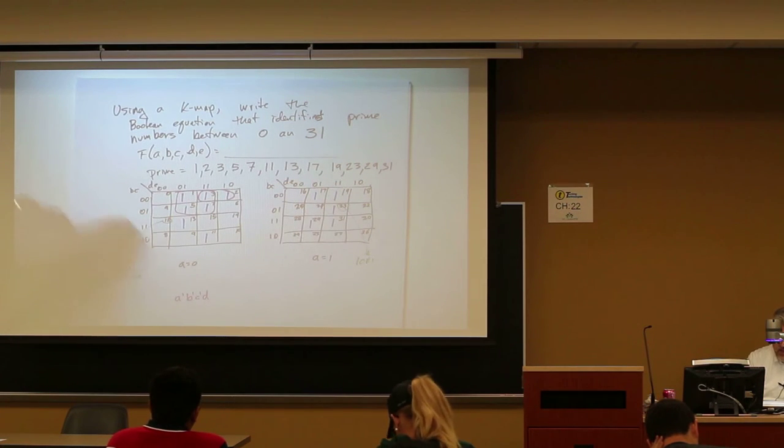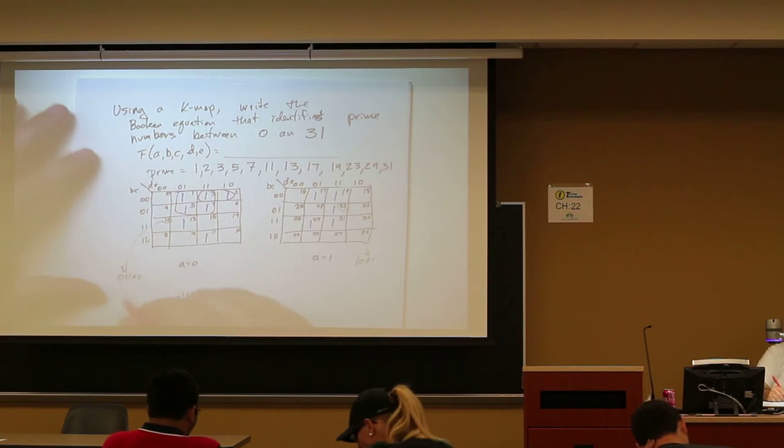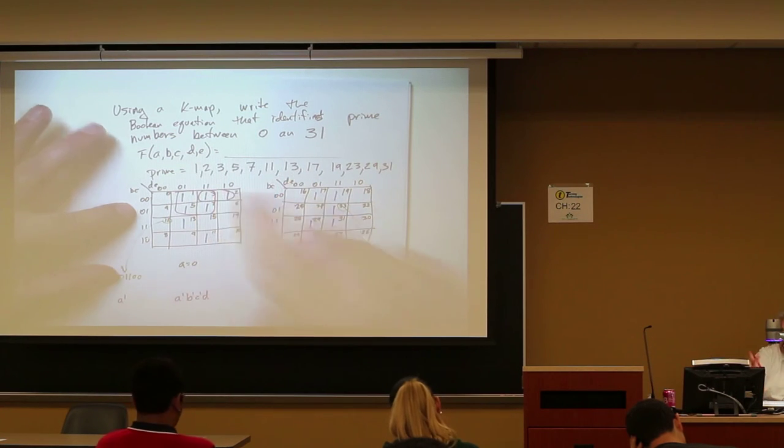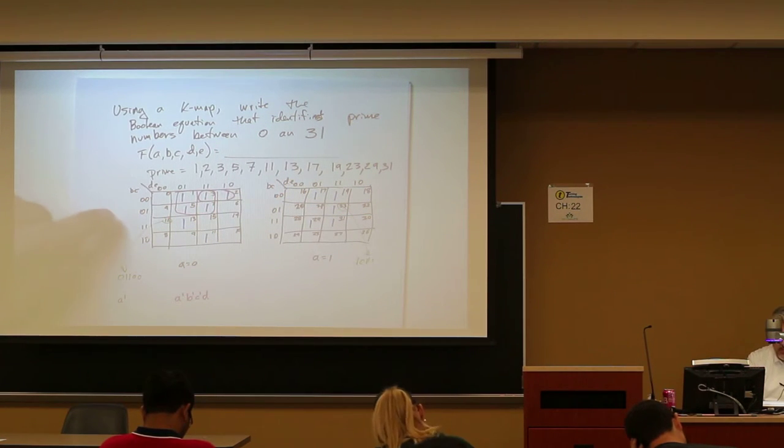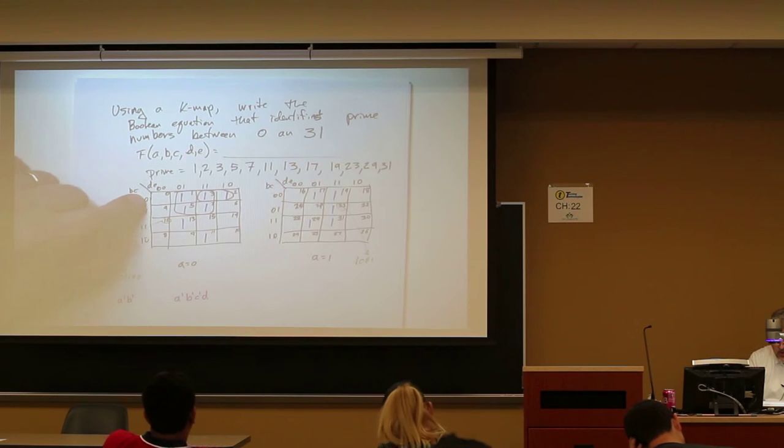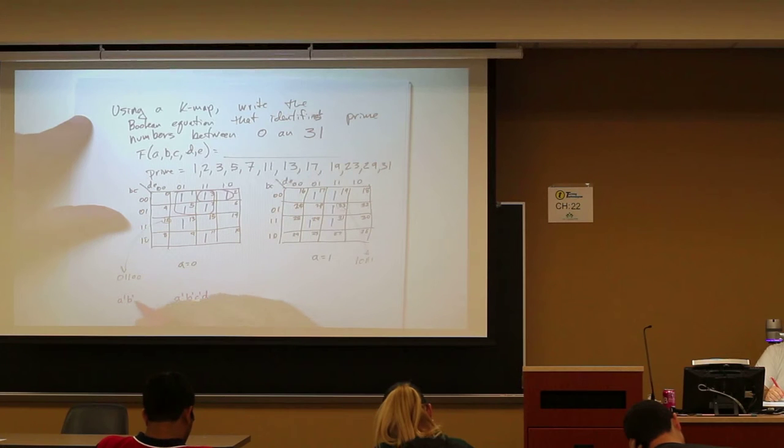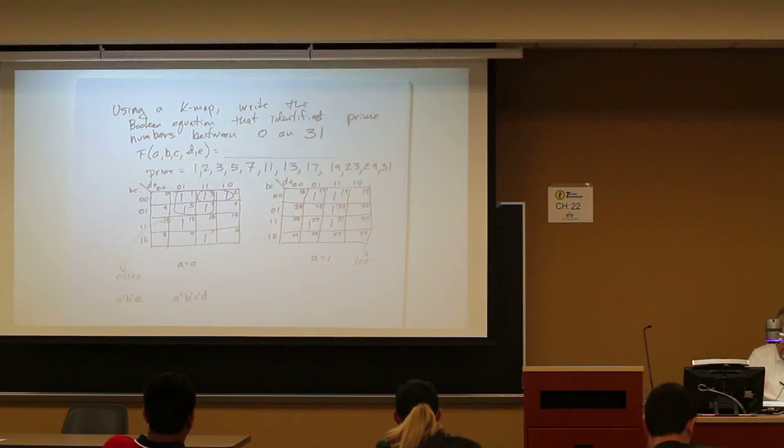So now what we've done is we know that it's when A is equal to zero. And by the way, we've circled four things, so we're going to eliminate two of our inputs that we have to worry about. In this case, B is also equal to zero, but it doesn't matter what C is, because in one case, C is zero. In the other case, C is one. Looking over here, oh, in this case, D is zero and D is one. But in this case, E is one. So now we've got those two.